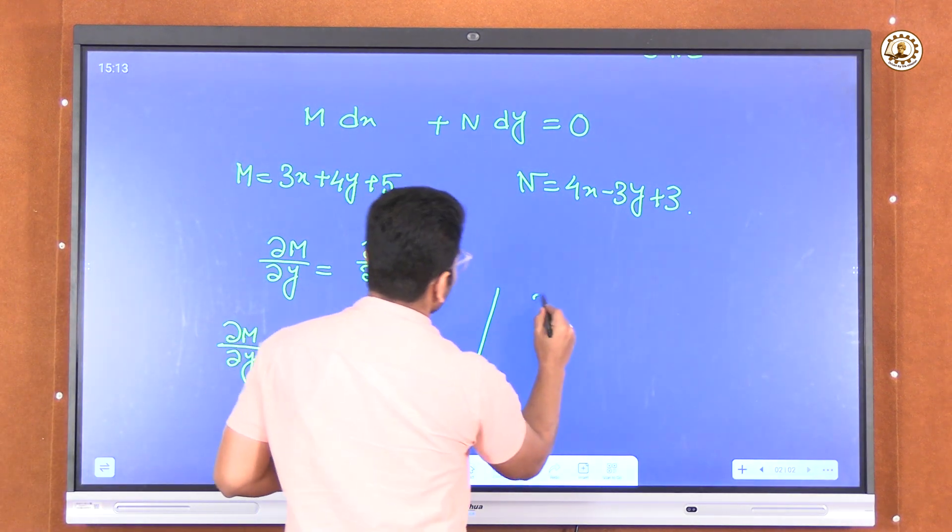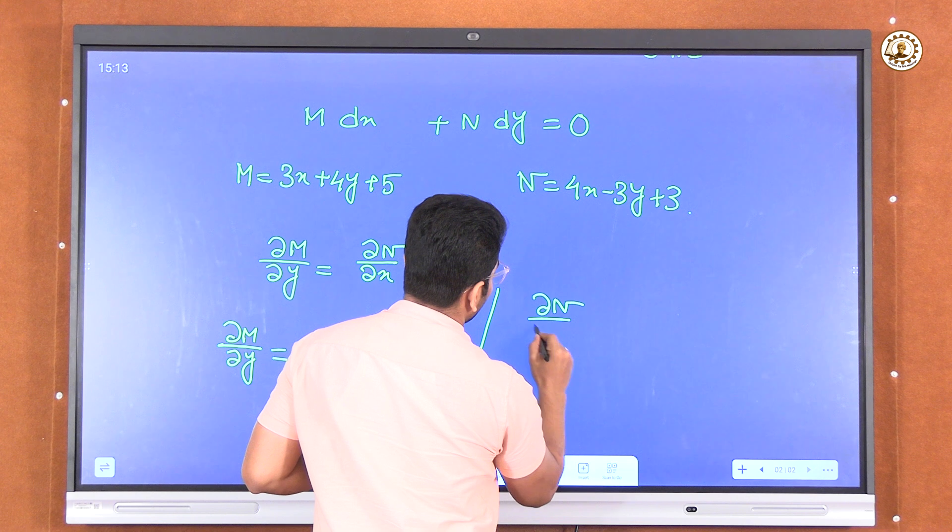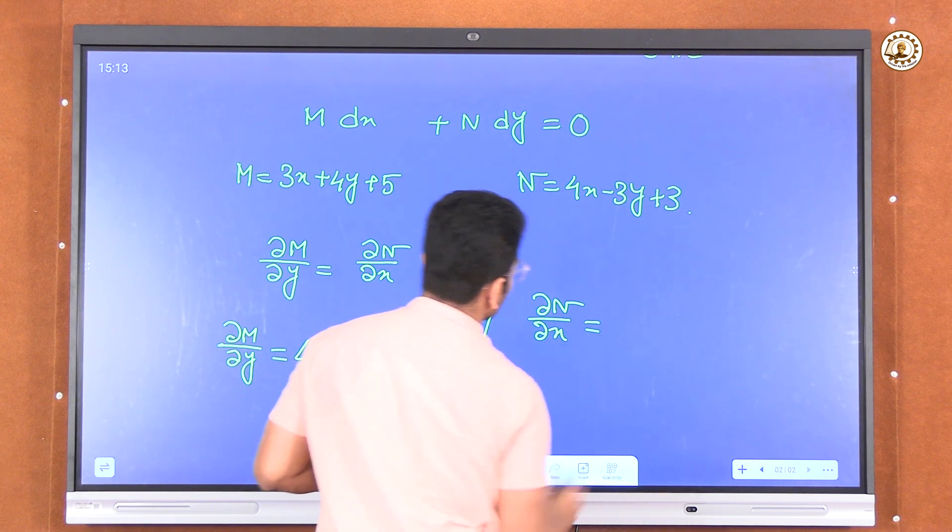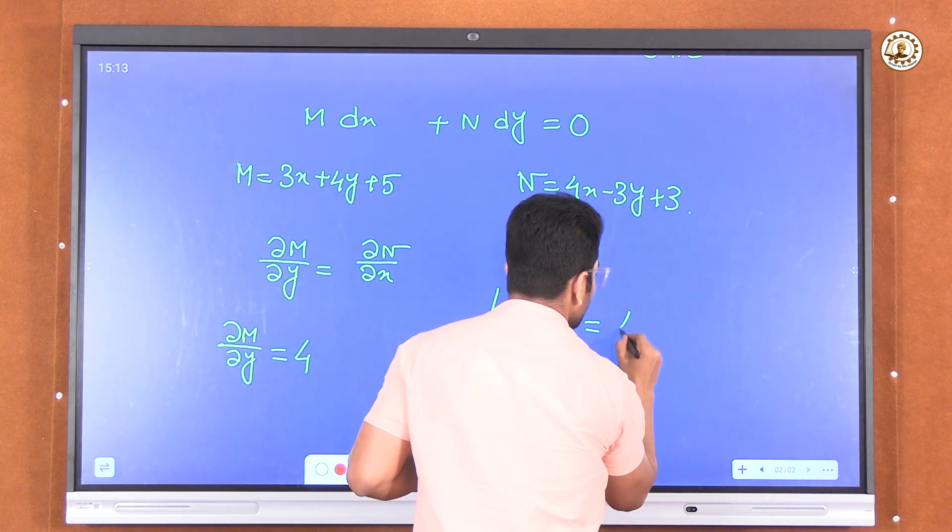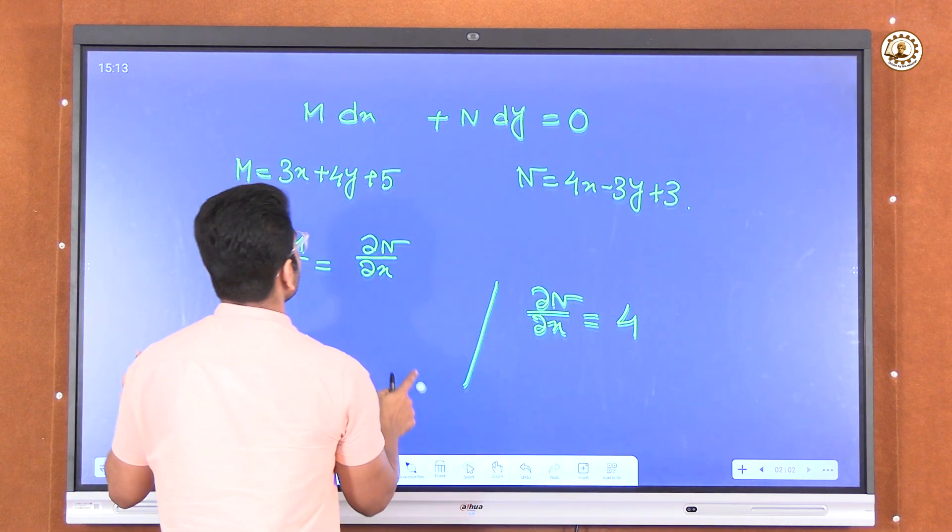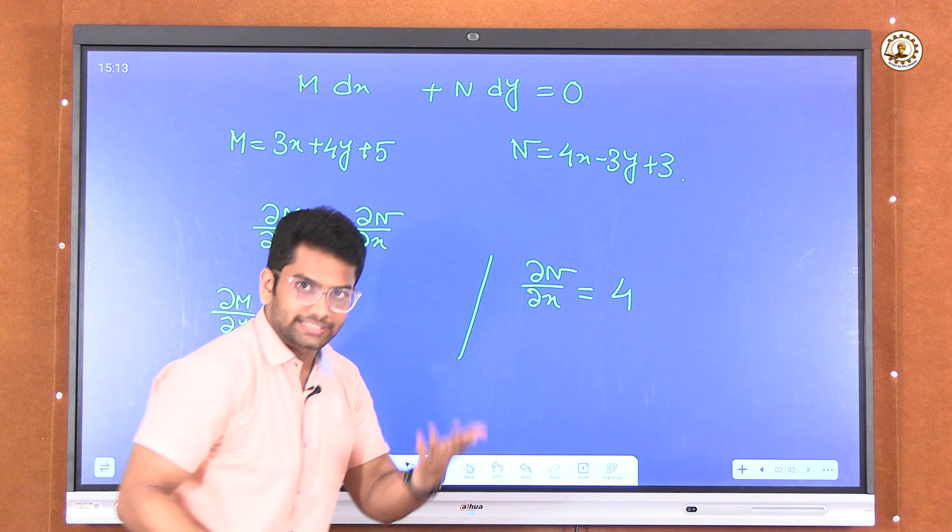Now again, ∂N/∂x is equivalent to, take the derivative of this function with respect to x, so it will be 4 because the -3y and +3 will be treated as constant.